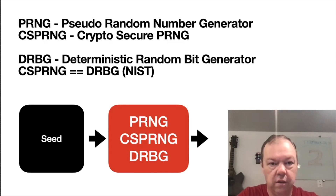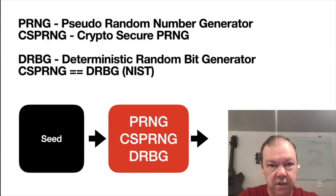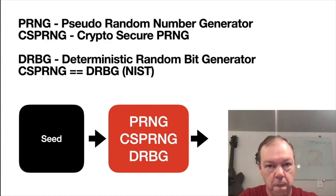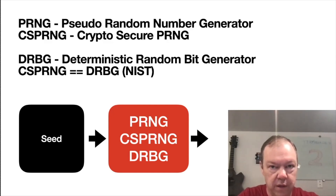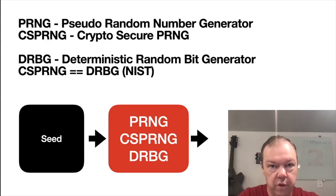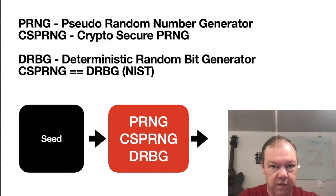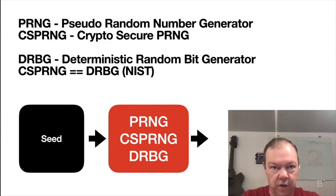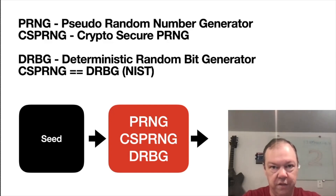Hello, and this is the second in the initial videos for the random number generator videos that accompany my book on random number generators. You'll find in the description below a link to where you can get that book and also some of the documents we're going to talk about. Here, instead of looking at pages full of random numbers and discussing how they were generated, we're going to look at the structure of random number generators and the terms we use to describe various parts of those structures.